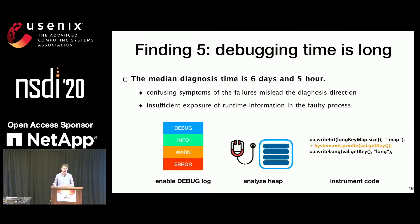We also find diagnosing partial failures is a painful experience for developers. But actually, for many cases, their root causes turn out to be simple — for example, just a blocking RPC. So why are they difficult to troubleshoot? One reason is mysterious symptoms mislead the troubleshooting direction, and the system does not expose enough runtime information. So developers have to enable debug logging, analyze heap, or instrument code.